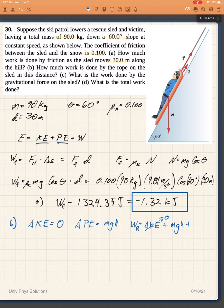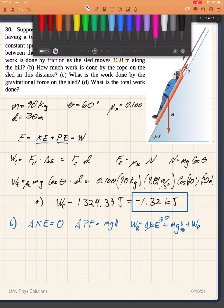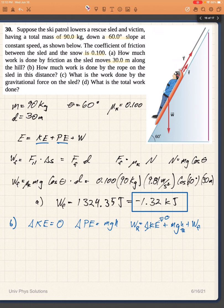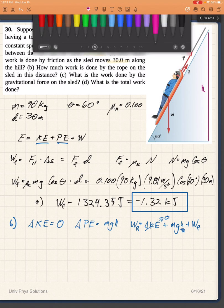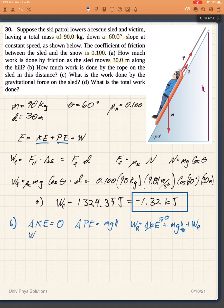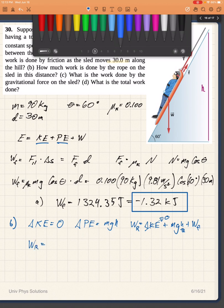Now all I need to find now is h. H is easy to find because if this is my distance h, then h will be simply related to the sign of 60. So the work done by the rope will be equal to mg times the distance d which is 30 times the sine of 60.